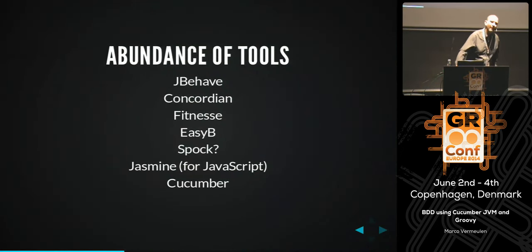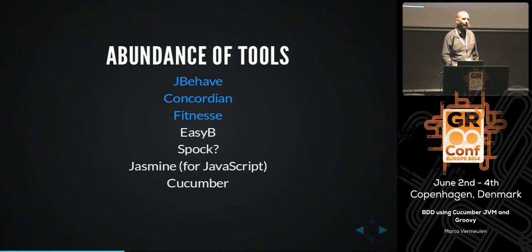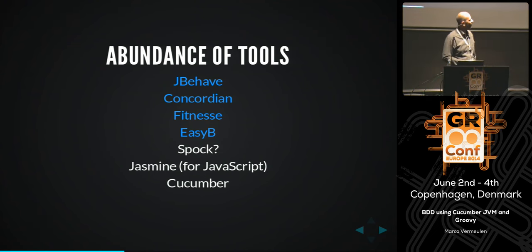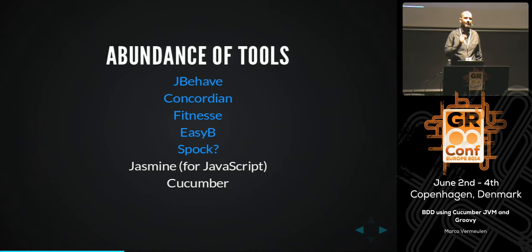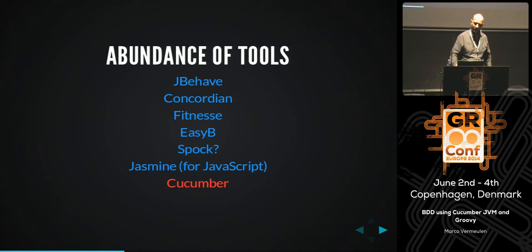The tools currently out there — JBehave, the initial one Dan North started to popularize BDD; Concordion and FitNesse, written by Uncle Bob — a wiki-based BDD tool; EasyB, which has a Groovy DSL but interestingly has been adopted more in Java shops than Groovy shops; Spock, which isn't a pure BDD framework but allows applying BDD at unit and integration test level — I normally use Spock hand in hand with Cucumber, using Cucumber for acceptance tests and Spock for integration and unit tests; Jasmine for JavaScript; and of course Cucumber, which we'll be looking at today.